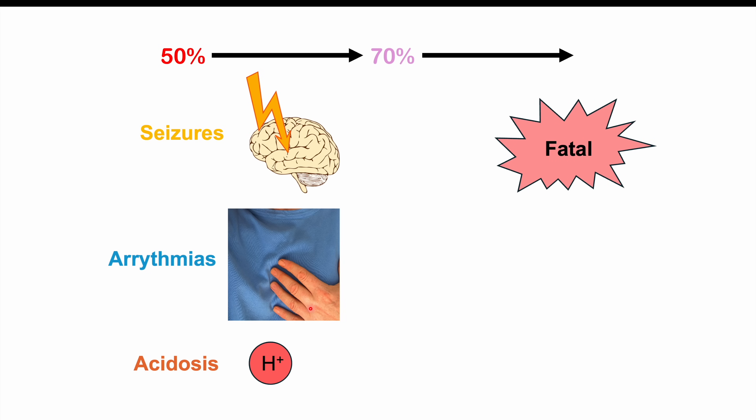Anything beyond 70% methemoglobin is often going to be fatal.